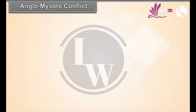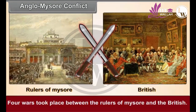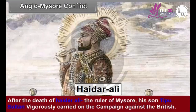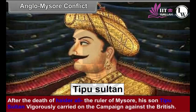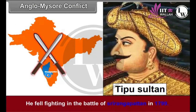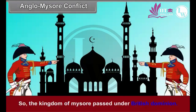Anglo-Mysore Conflict. Four wars took place between the rulers of Mysore and the British. After the death of Haidar Ali, the ruler of Mysore, his son Tipu Sultan vigorously carried on the campaign against the British. He fell fighting in the battle of Shriranga Pattanam in 1799. So, the Kingdom of Mysore passed under British dominion.